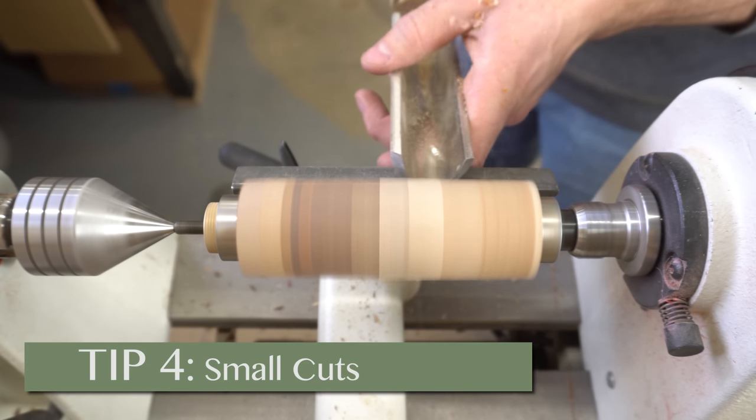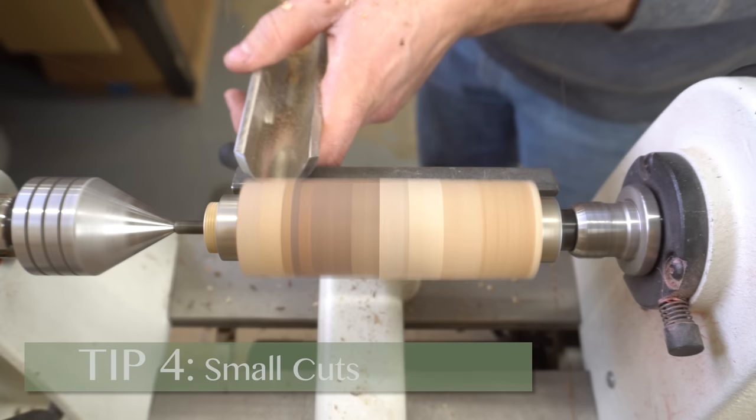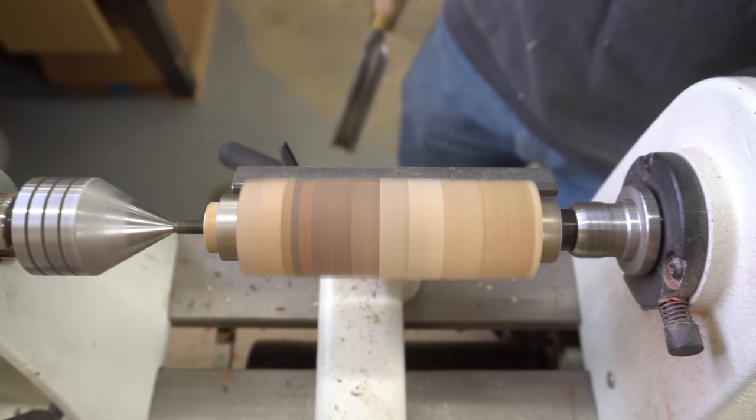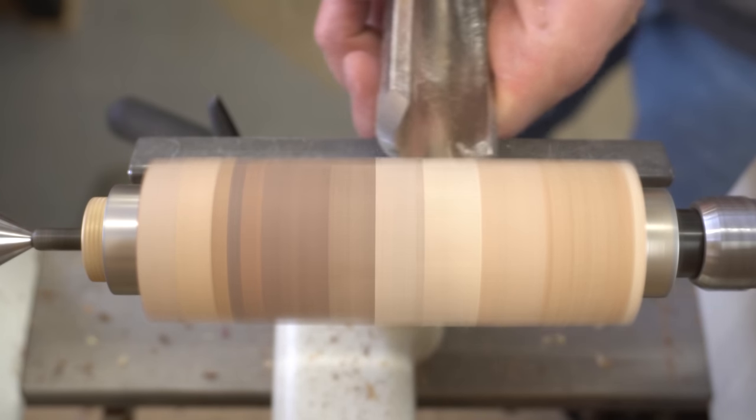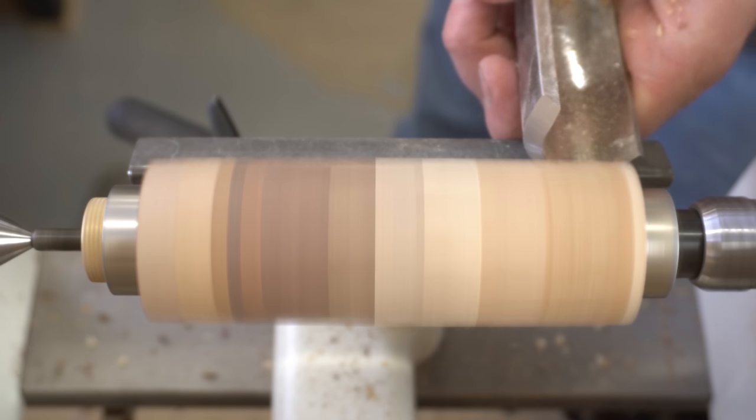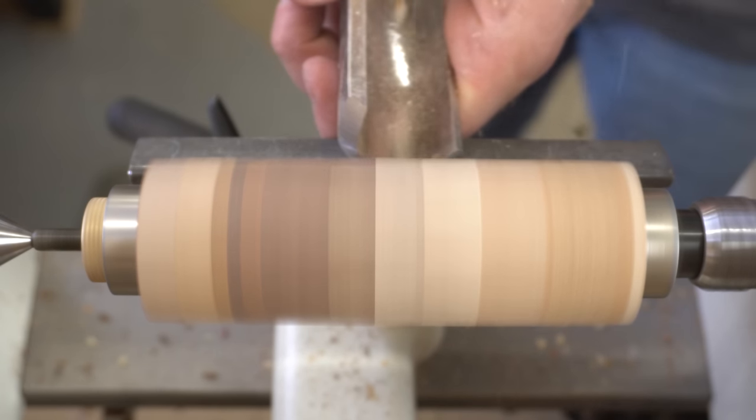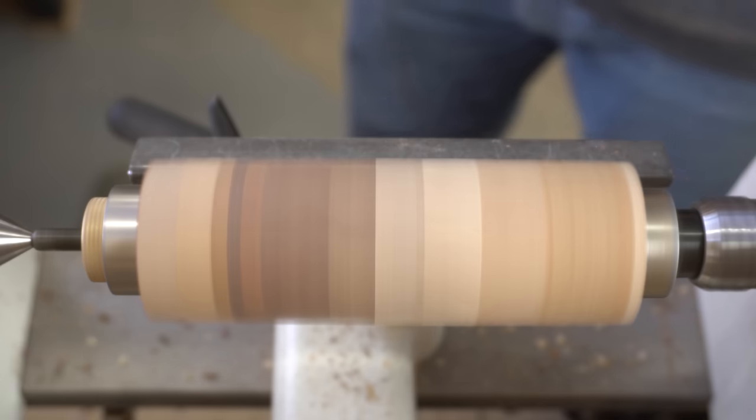Tip number four, take very small cuts. In regular edge grain turning, you can get away with taking bigger bites in order to remove material faster. With end grain, just plan on going slow. Taking a big bite is going to cause a catch and nasty tear out, and depending on the project, you might not be able to recover from it.